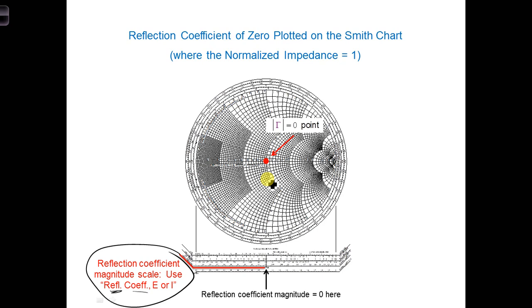Well, what we can do is draw a straight line down, and we can then read off where we are on the scale. So we see a magnitude of 0 here corresponds to the center of the Smith chart, and the magnitude increases as we move further away from the center of the Smith chart.